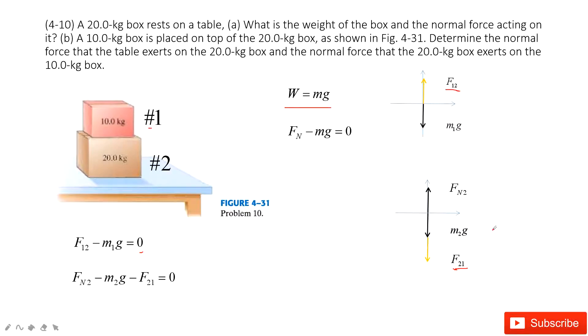Then we look at box 2. Similarly, we get Fn2 minus M2g minus F21 equals 0. Because it's stationary, acceleration is 0. We also know this pair of forces must satisfy Newton's third law—equal in magnitude.